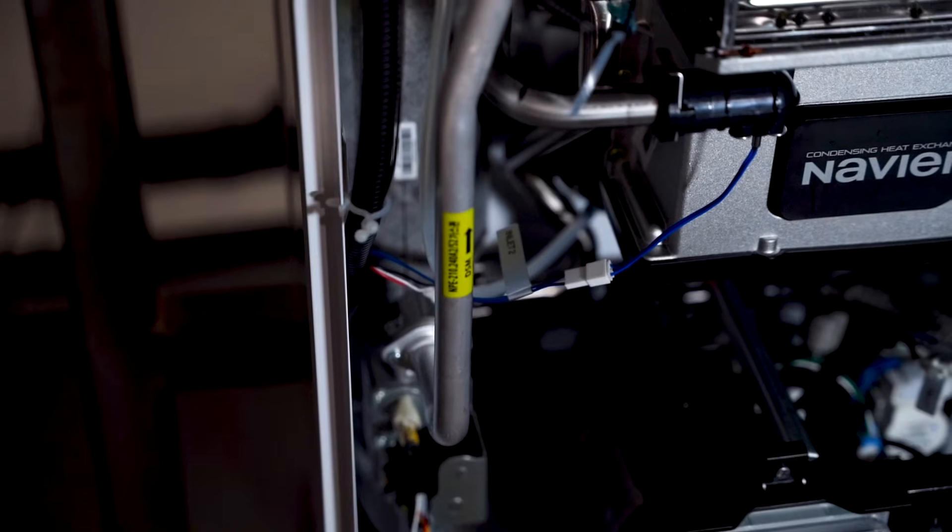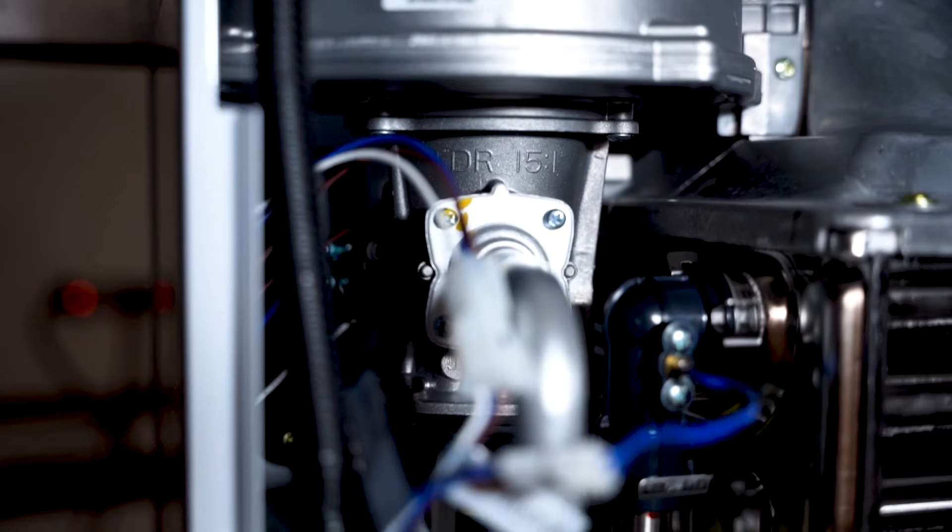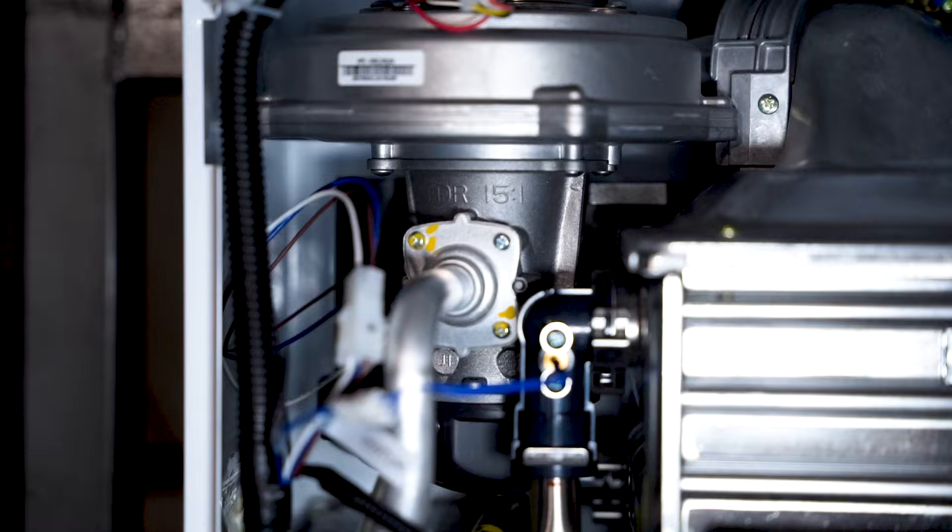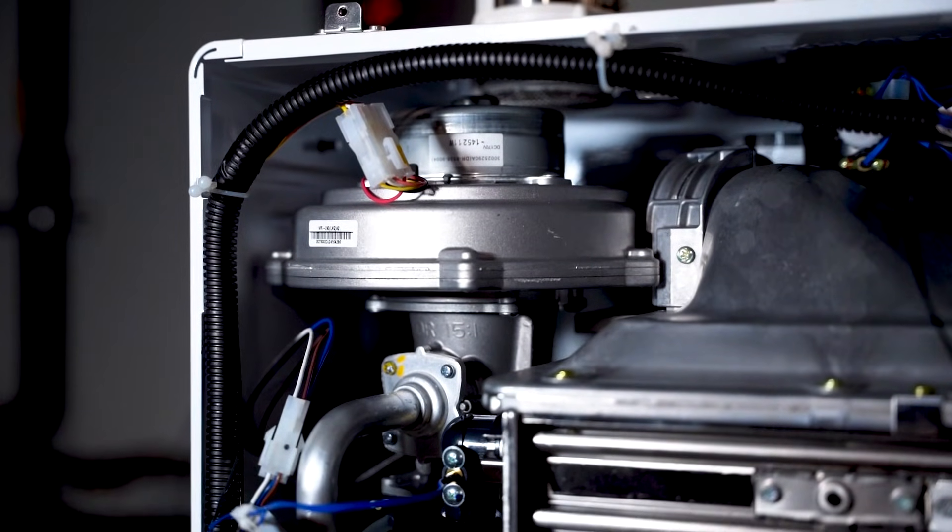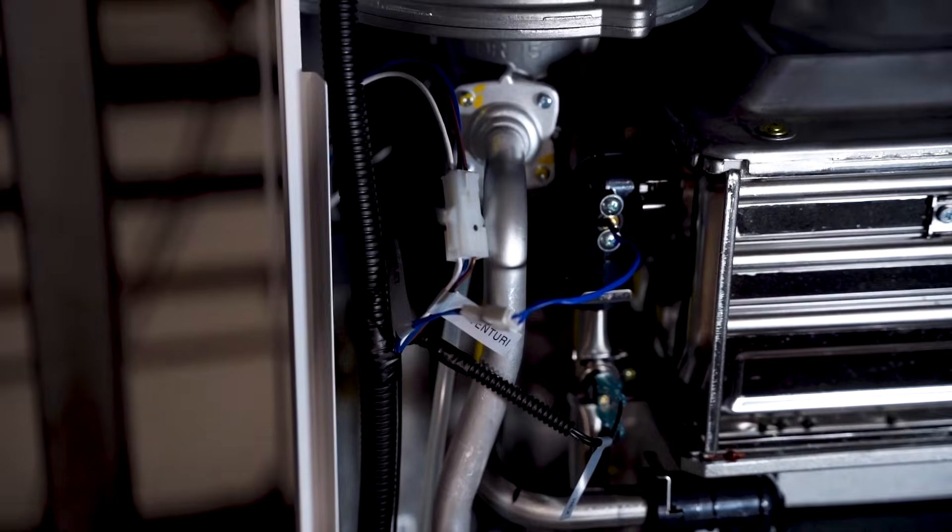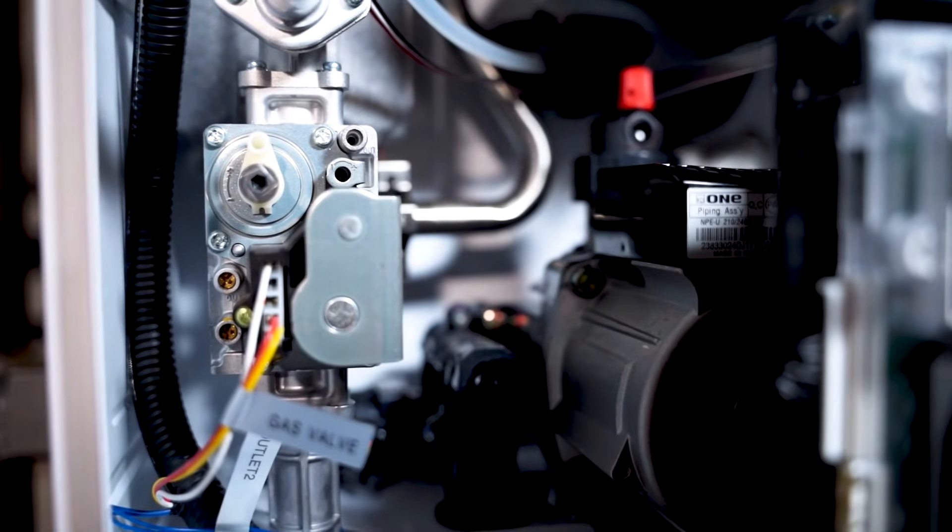The gas train is made up of three different components: the gas valve, the dual venturi, and the exhaust blower. Those three components work together to maintain proper combustion, and the gas valve also has redundant solenoid valves to provide an extra level of safety inside the unit.